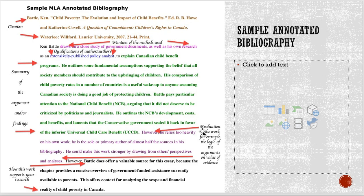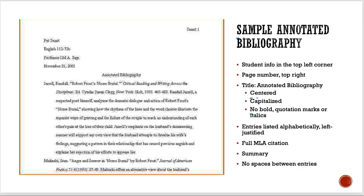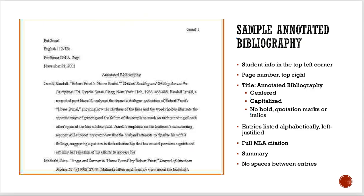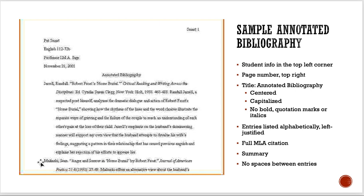Then you start off by identifying who the author is, mention the methods they use and their qualifications, the author and audience, then a summary of what's happening in the article. These next parts are really important: you evaluate the work, compare it maybe to something else. Then at the last part — a sentence or two — it says how this source helps your research. How does it compare? Is it good? And then how does it help your research? That's what an entry is going to look like. Then the next entry starts the same way, all the way over to the left — left justification.